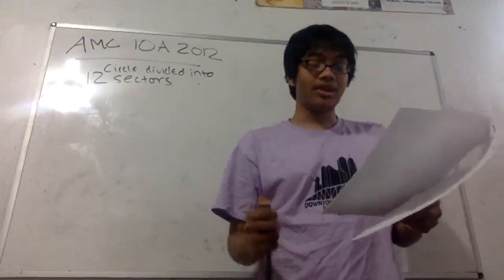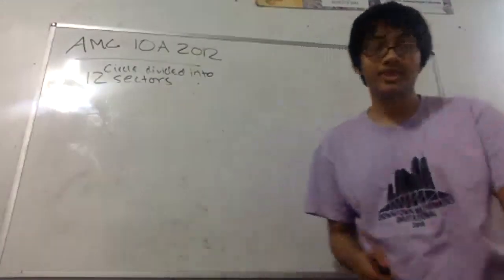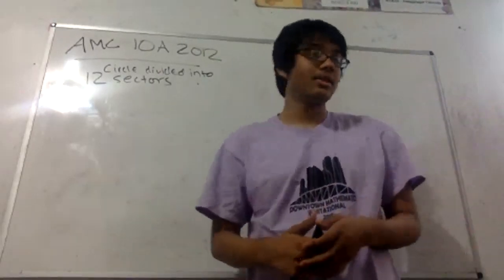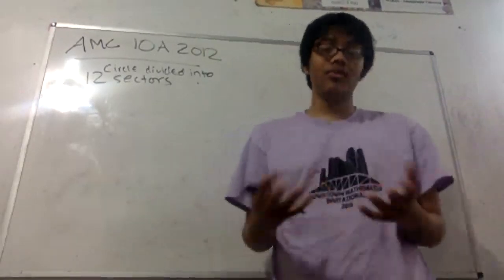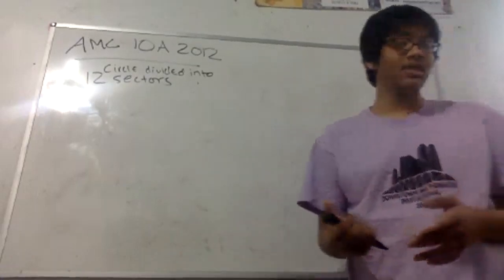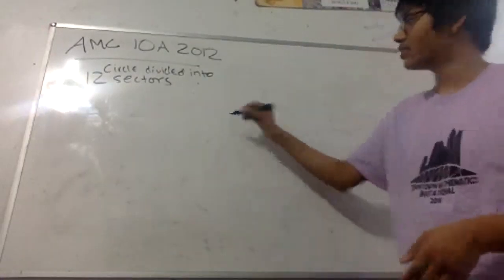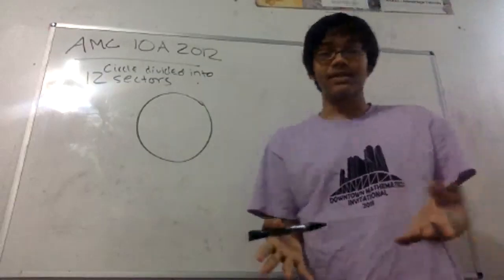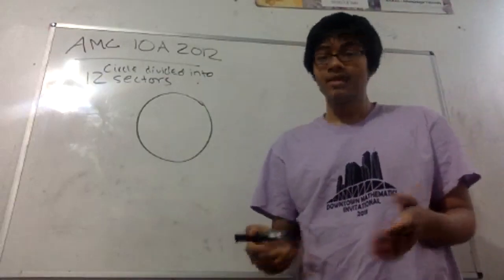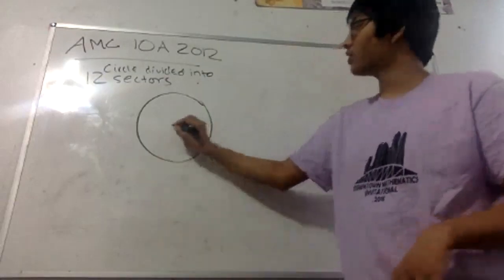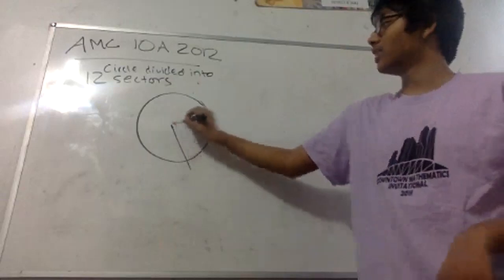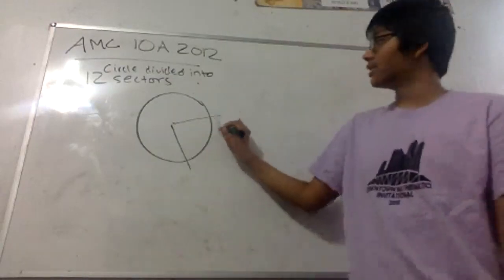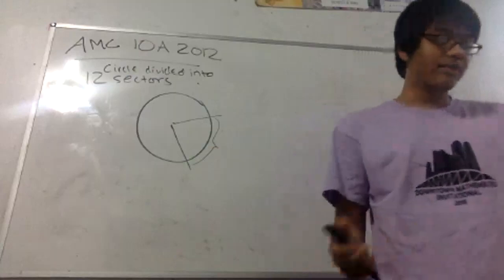To get started with this problem, the first thing we're going to do is understand what a sector is. So what is a sector, you may ask? Well, a sector — let's first draw a circle. A sector of the circle is going to be a portion of the circle subtended by the central angle. So for example, this is a sector of the circle.